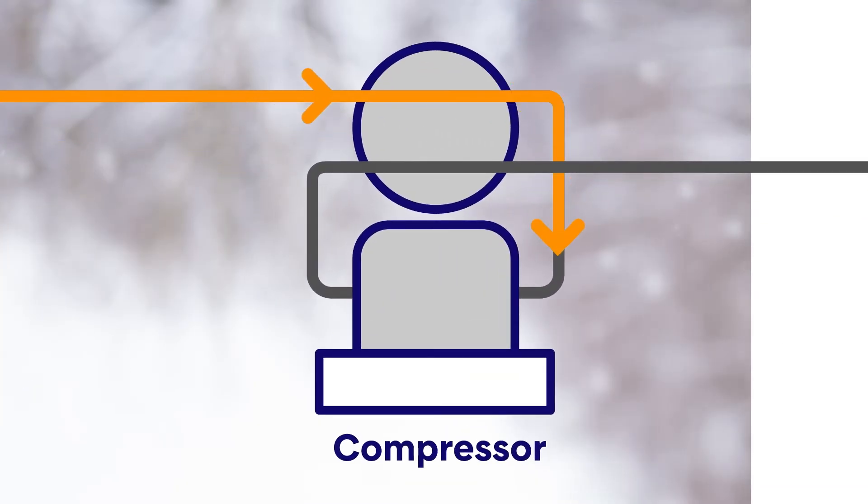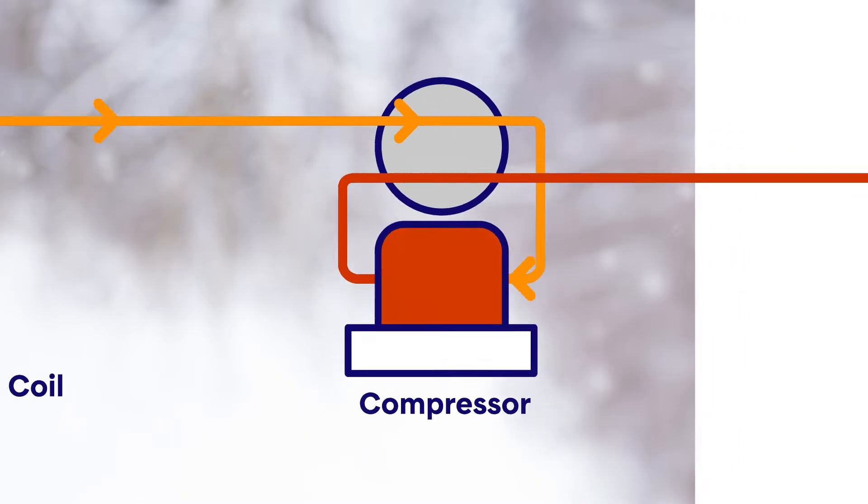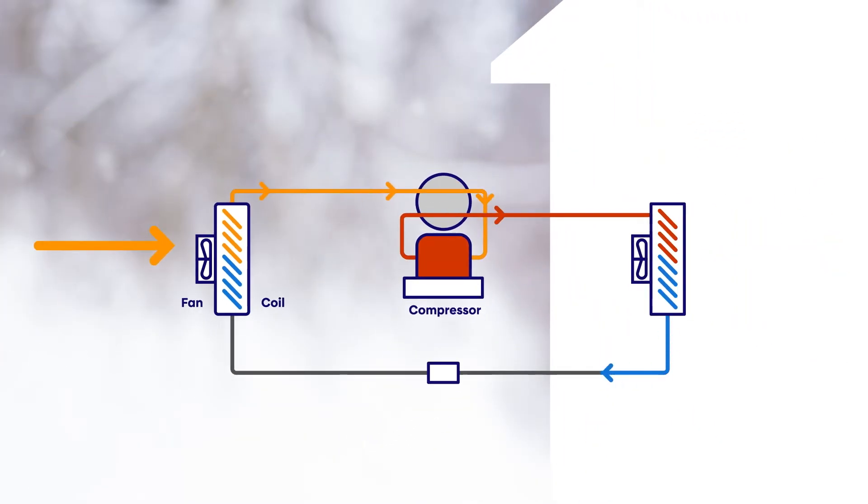The refrigerant moves through the compressor, which compresses the gas to warm it up. When the heat is released indoors, the refrigerant cools down. It becomes liquid and returns outdoors, where the cycle starts again.